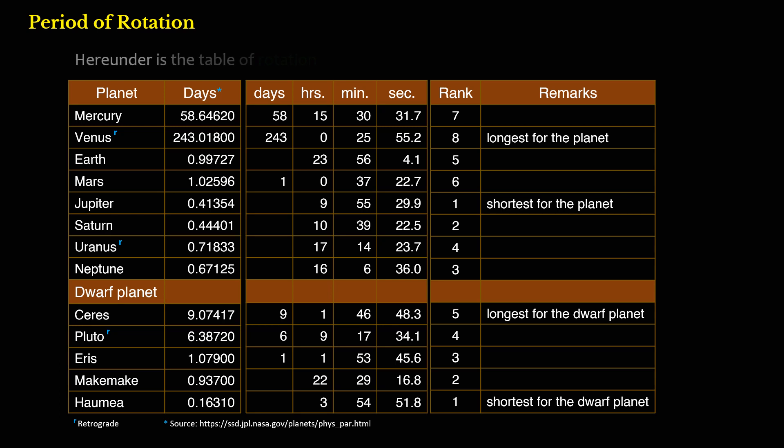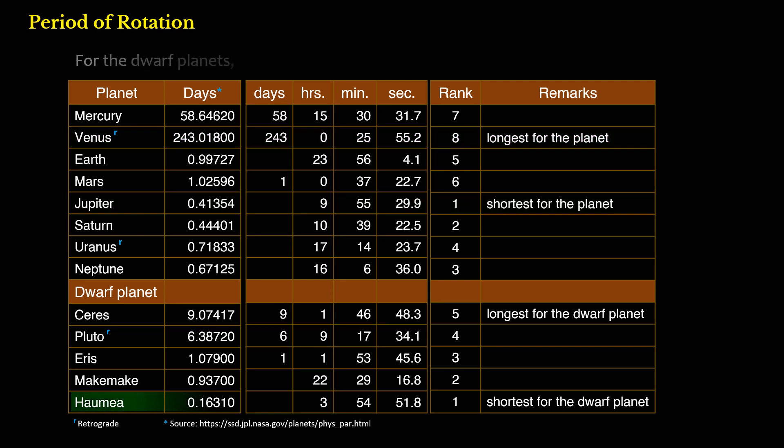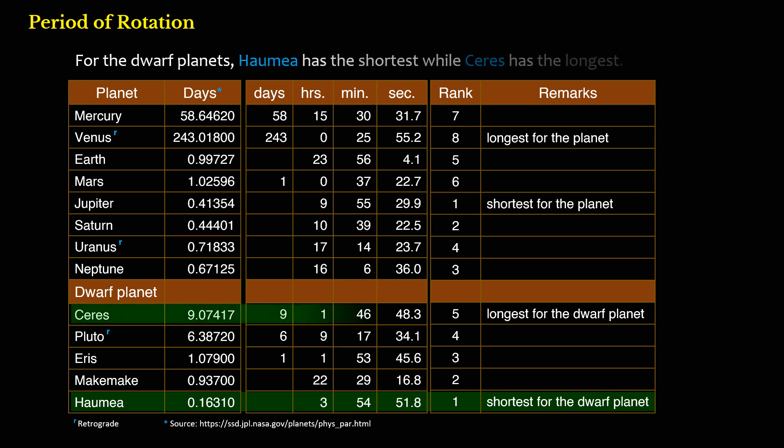Here under is the table of rotation period for the planets and dwarf planets. Jupiter has the shortest while Venus has the longest rotation period for the planets. For the dwarf planets, Haumea has the shortest while Ceres has the longest.